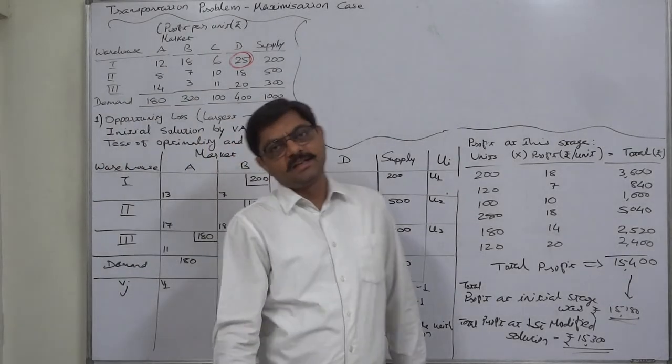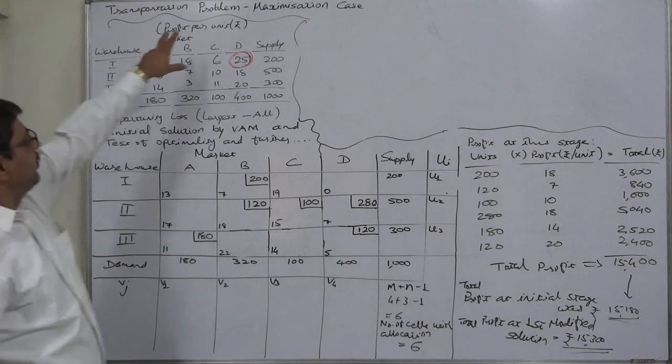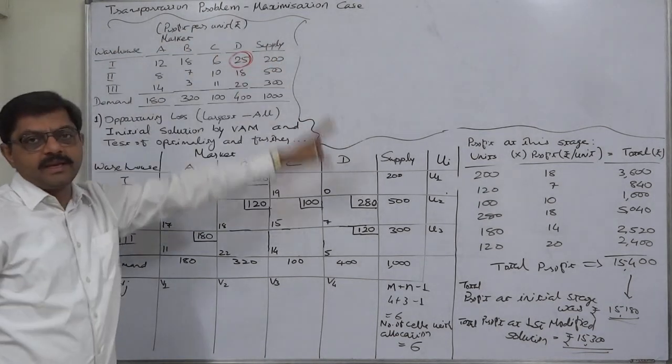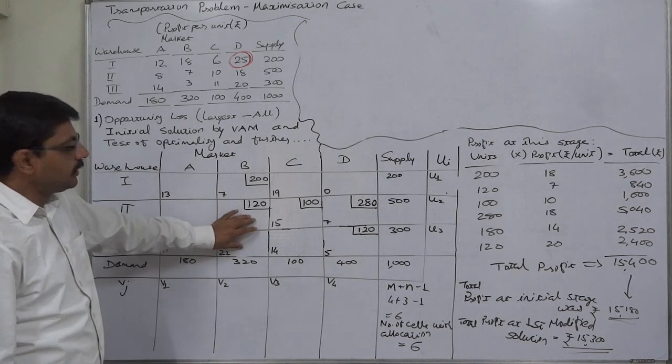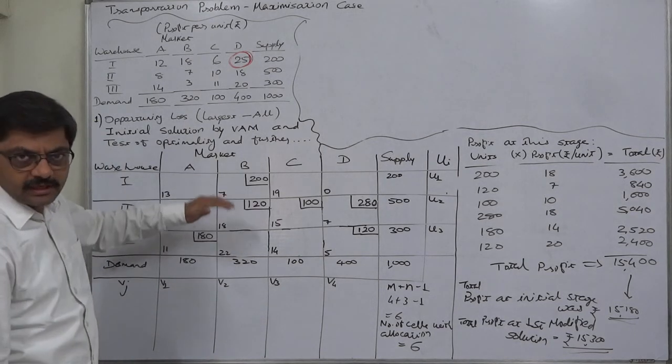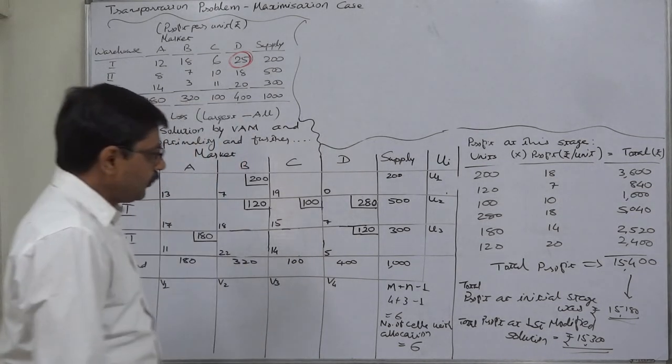Hello and welcome back to the last stage, last part of the solution of a maximization problem in case of transportation problem. This is our third solution - first was initial, then modified one, and this is modified two.